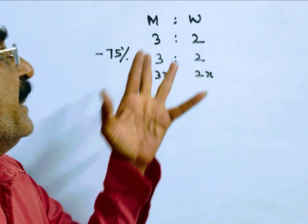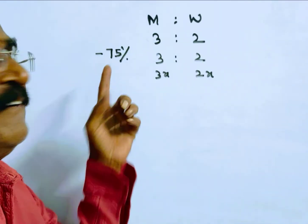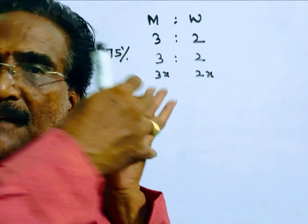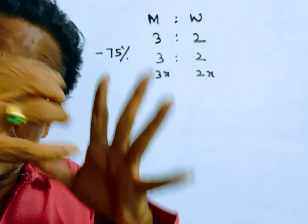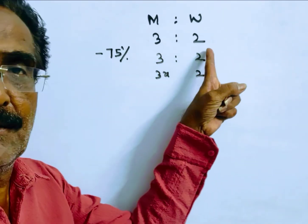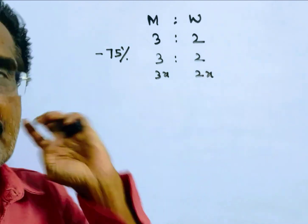See friends, in a container milk and water are in the ratio 3 is to 2. Now 75% of the mixture is drawn out. Friends, if 75% of the mixture is drawn out, in the resultant mixture also milk and water will be in the same ratio 3 is to 2, that is milk 3x and water 2x.